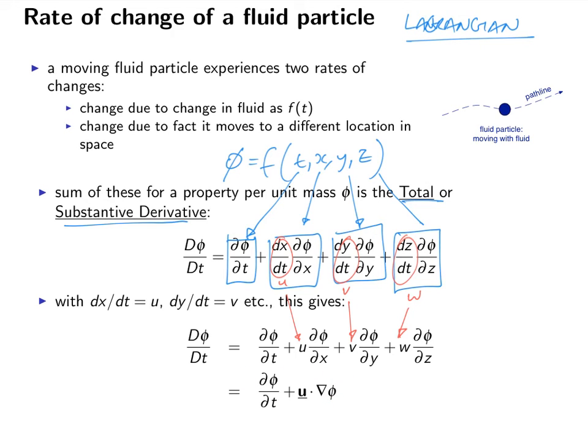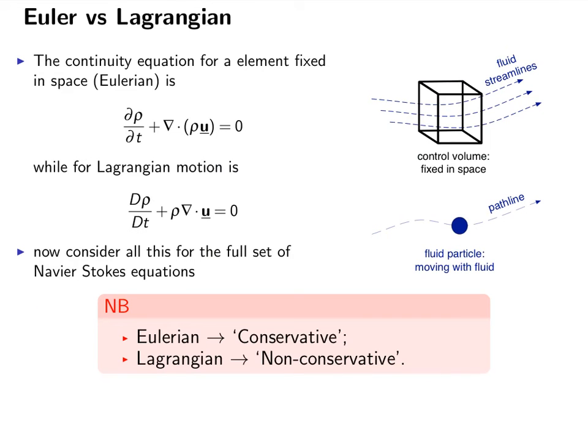Now, in order to equate this to the Eulerian frame, we need to consider them side by side. So here we can see them side by side. This is the Eulerian definition of a continuity equation, and this is the Lagrangian definition. And on first glance, they don't look to be the same. Now, combining what we've seen from the previous slide, let me demonstrate that they are, in fact, exactly the same.